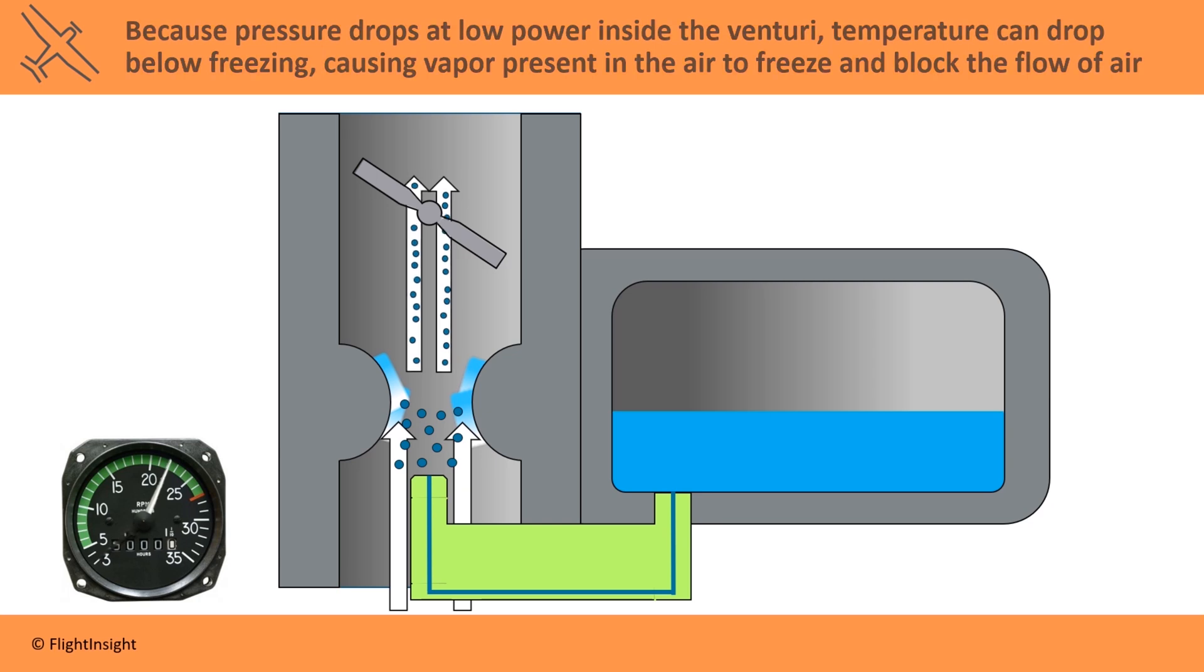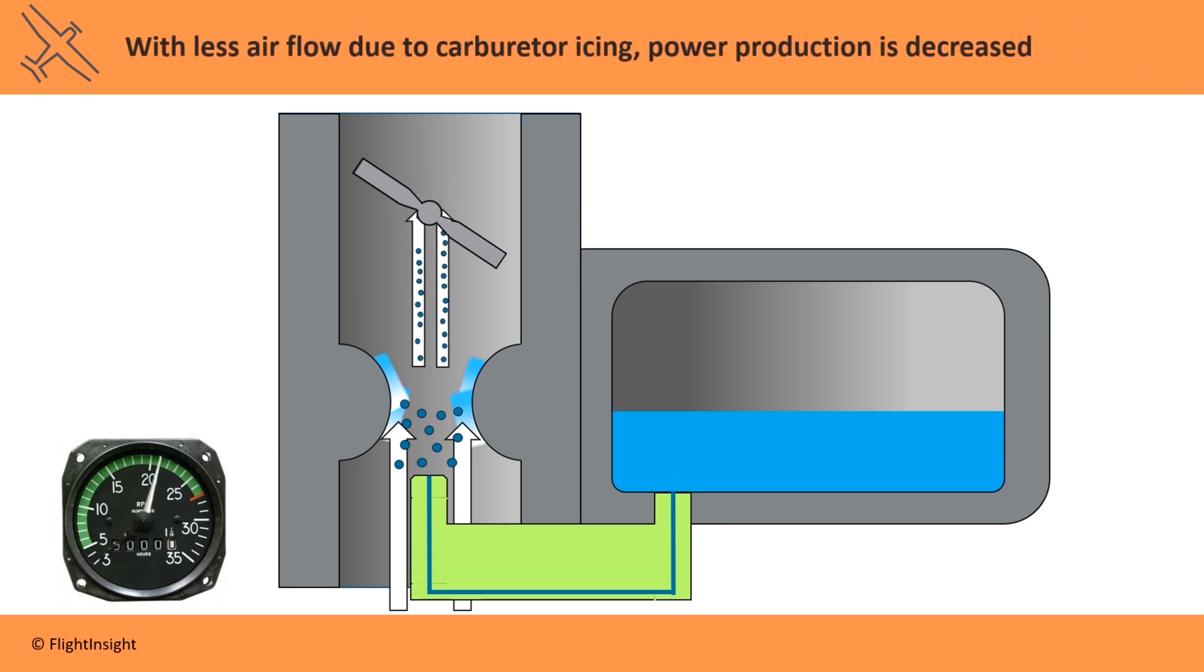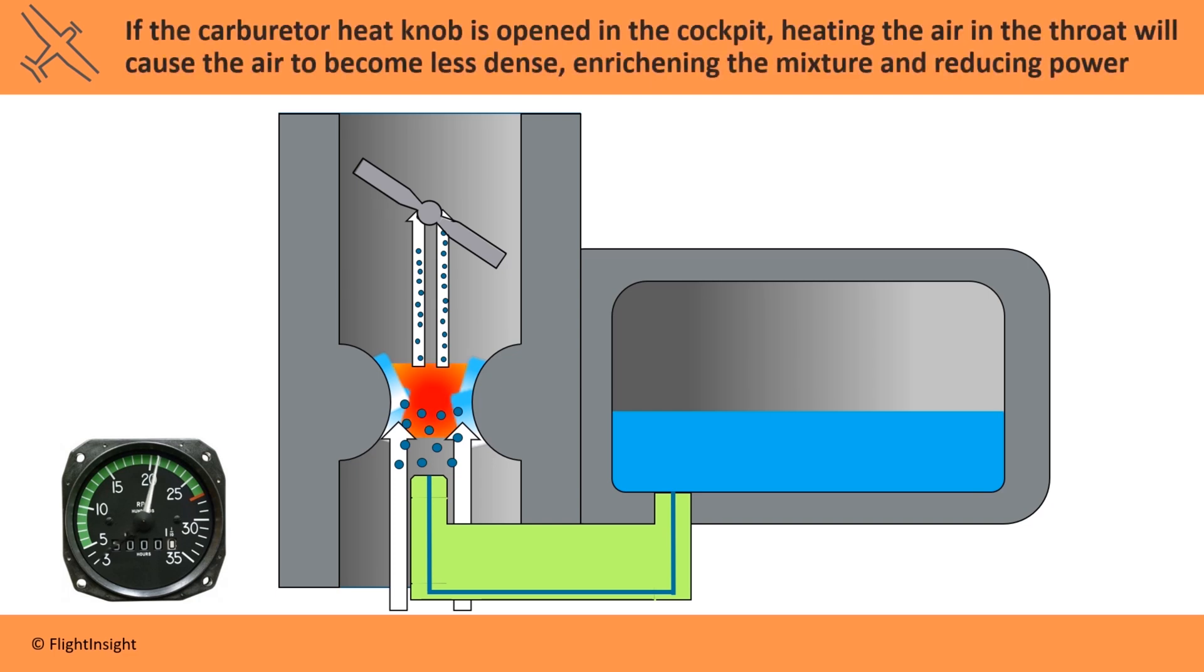With less airflow due to carb icing, power production is decreased. If the carburetor heat knob is opened in the cockpit, heating the air in the throat will cause the air to become less dense, enriching the mixture and reducing power.